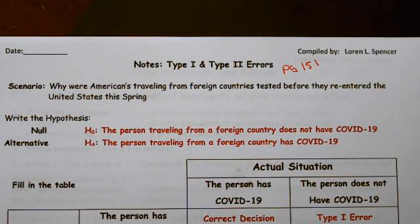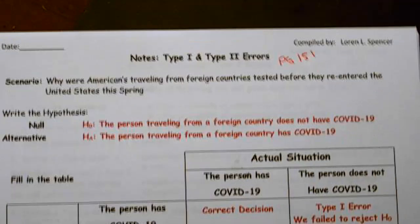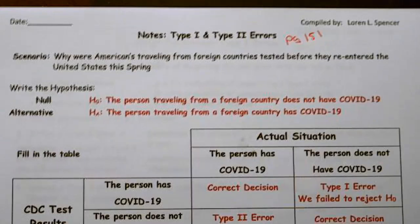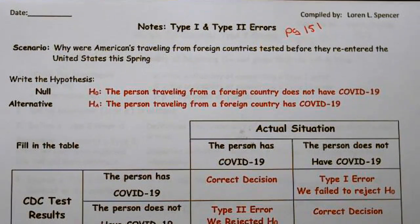So this is page 151 of the notes, and this is the COVID example. Why were American citizens traveling from foreign countries tested for COVID before they re-entered the United States in the spring of 2020?